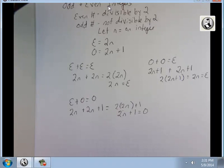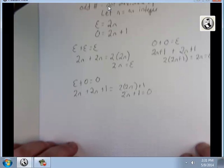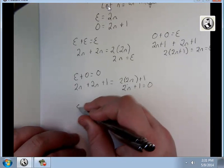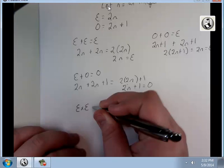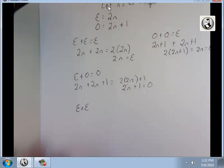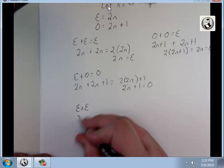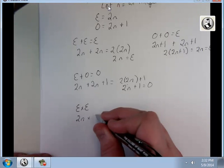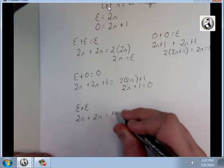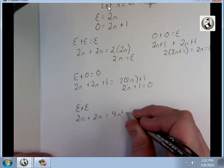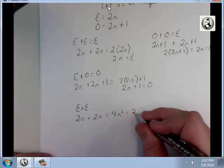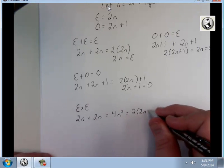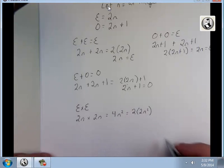Now, how about multiplying? What's an even times an even? This is going to get a little bit higher up, so if you're having a little bit of trouble with this, don't feel afraid to send me an email. 2n times 2n is 4n squared, which I can rewrite as 2 times 2n squared, which, that's still an integer, so this value is even.